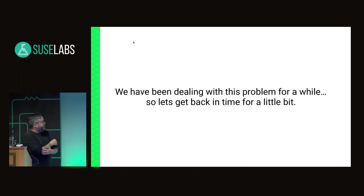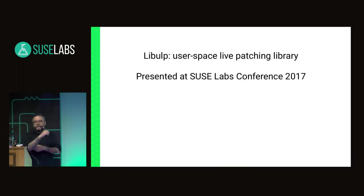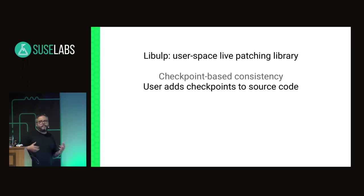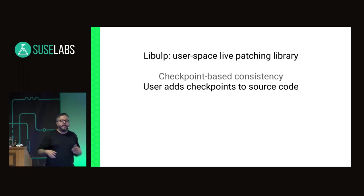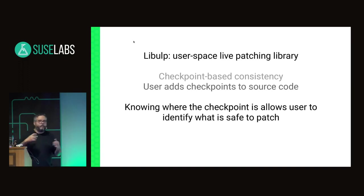We have been dealing with this problem for a while. Since I started with the company, we started working on it. Previously, in user space live patching, we had what we called libULP — a user space live patching library presented at the last labs conference. It had a checkpoint-based consistency model. The user would need to add checkpoints to the source code, getting a frequently executed function and adding a checkpoint there, which would check if there was a patch to be applied and whether it was safe to patch a given set of functions.